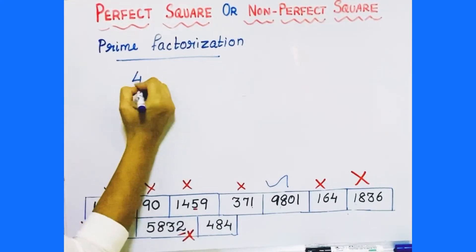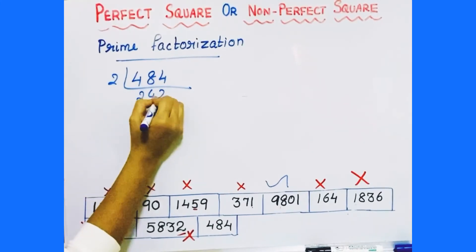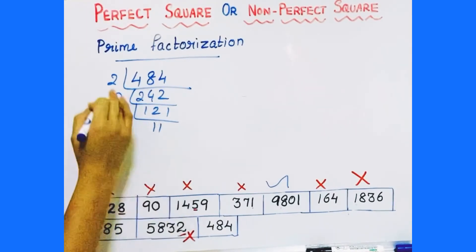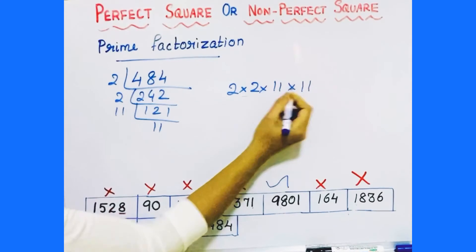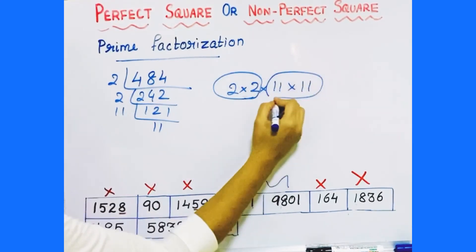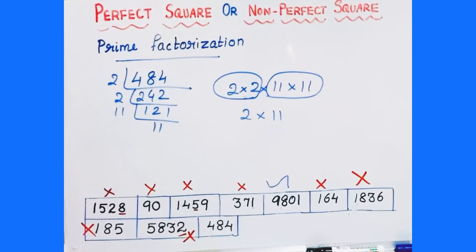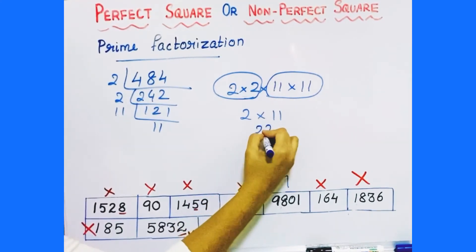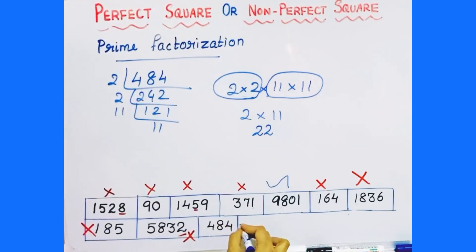Next number is 484. Let's do prime factorization. Divide by 2: 242. Divide by 2 again: 121. It goes with the 11 table: 11 is a prime number, so stop. List out the factors: 2 times 2 times 11 times 11. Make pairs — none of the numbers are left without a pair. So it is a perfect square number. The square root is 22, since 22 squared is 484.